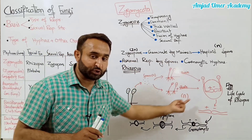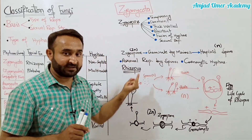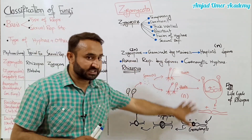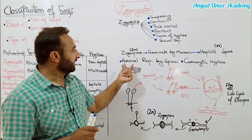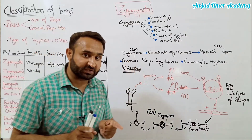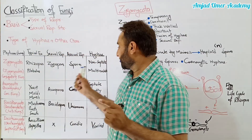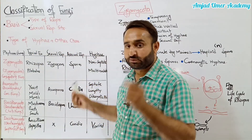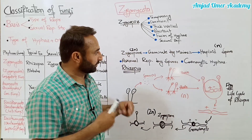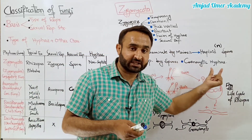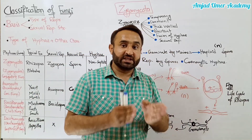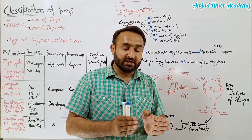Ye Rhizopus, jo conjugating fungi hai aur Zygomycota hai, iska life cycle hum yahan detail mein discuss karte hain. Is mein asexual reproduction spores ke zariye hoti hai, jaise main pehle bata chuka hun. Ye spores asexually reproductive spores hain. Ye coenocytic hyphae rakhte hain - yani multi-nucleated aur non-septate hote hain.